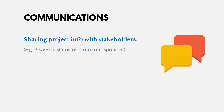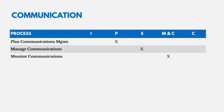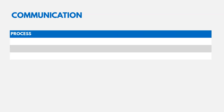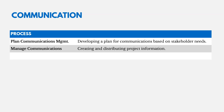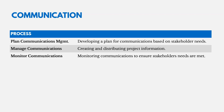Communications management involves sharing project information with stakeholders, like a weekly status report with a sponsor. There are three processes: one in planning, one in executing, and one in monitoring and controlling. We plan communications management by developing a plan based on stakeholder needs — what information they need and when. We manage communications by creating and distributing that information. And we monitor communications over time to see if stakeholders' needs are being met.